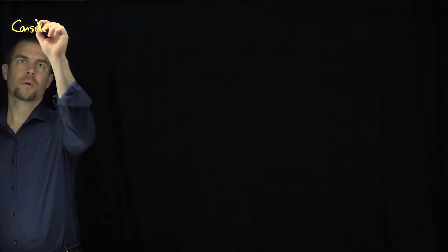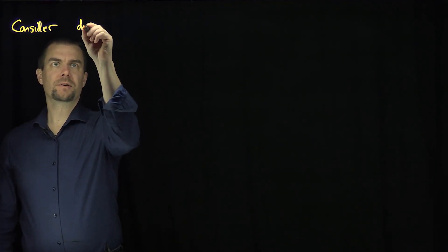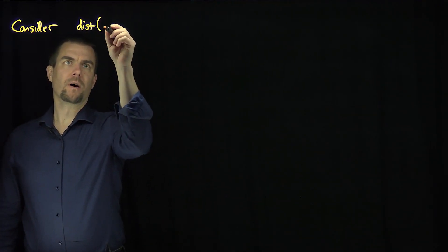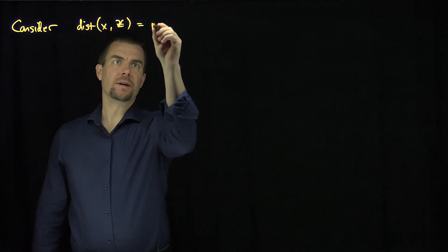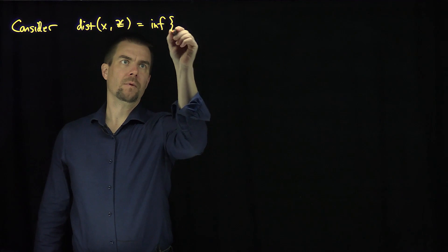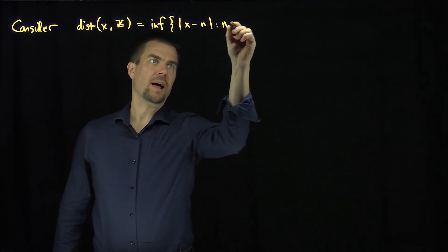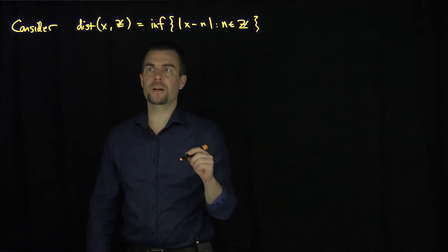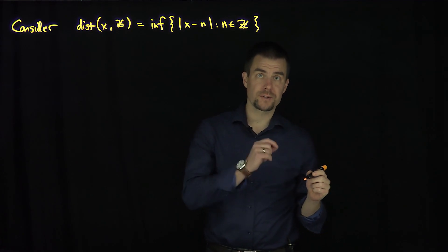First we consider a function which is going to be called distance from x to Z. And what is this? This is the infimum of |x minus n| such that n is in Z. What this function does is it picks the closest integer to the number x and it measures the distance.